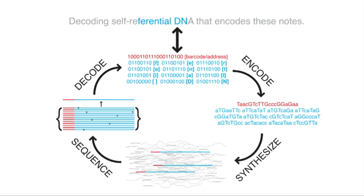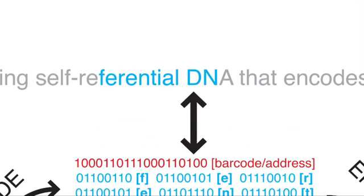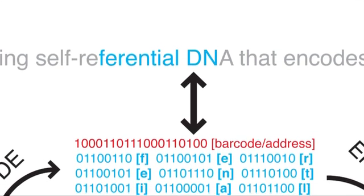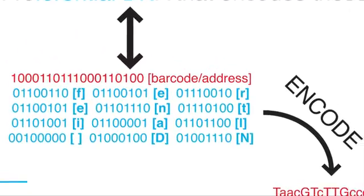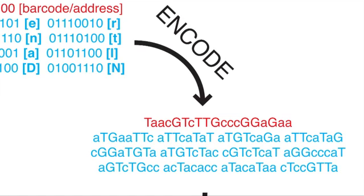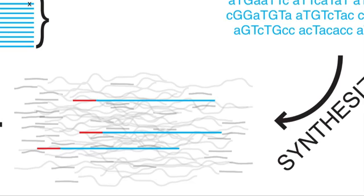The book we encoded was actually a book that George has written, and in the book is a section on this particular piece of work. The sentence being shown in the image is almost a meta-sentence from the book that says, 'decoding self-referential DNA, encoding these nodes.' We show how we take, in this particular case, starting with the F in 'referential' and ending in the N in 'DNA,' to individual bits, which correspond to ASCII codes and a barcode. Then we take those ones and zeros and convert them to A, T, C, and G — the DNA bases — where T and G stand for one and A and C stand for zero.